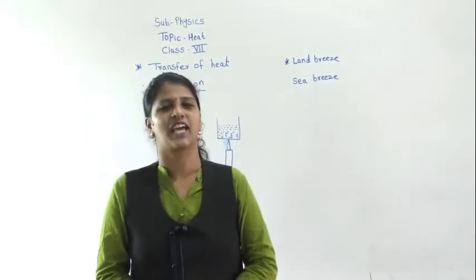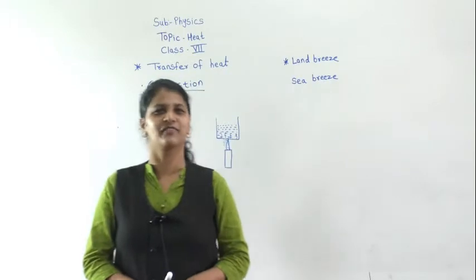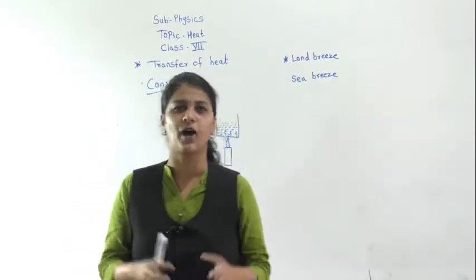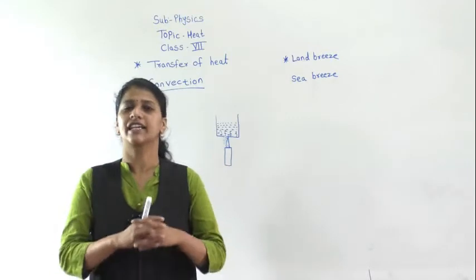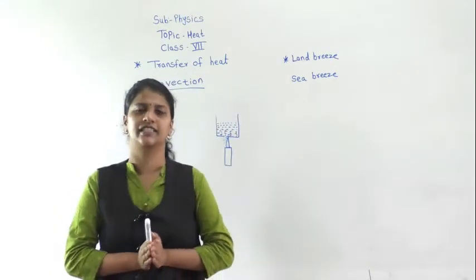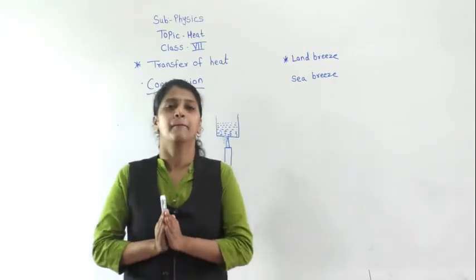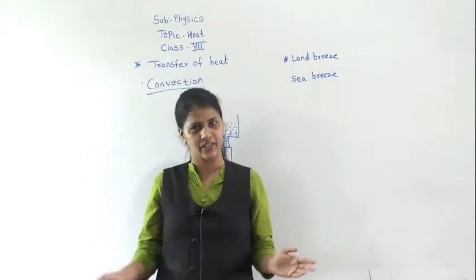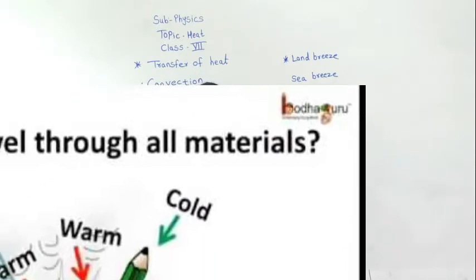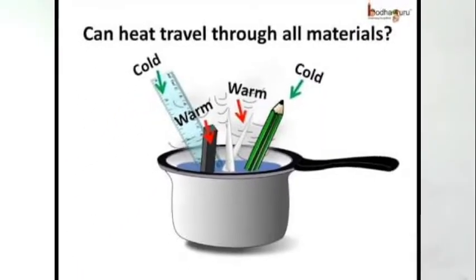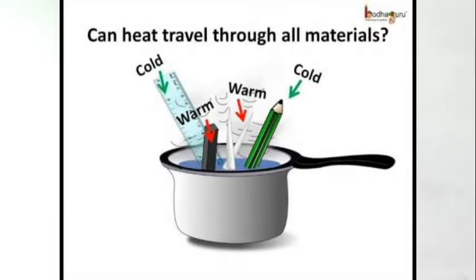Good morning, dear students. We are back with our physics lecture. In the last video, we discussed heat and the transfer of heat. I taught you one mode of heat transfer — conduction — and we also discussed two types of conductors: good conductors and bad conductors. Bad conductors are also called insulators. I told you to do one activity where in a hot picker you place a plastic scale and then a knife, and the knife will get heated first.